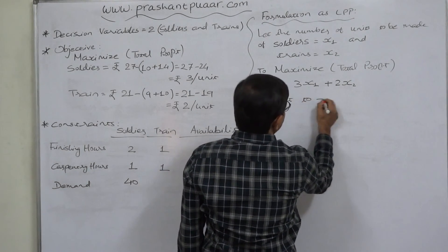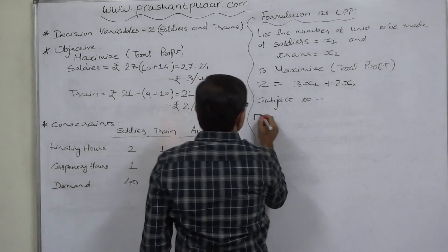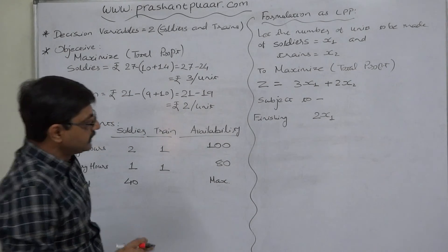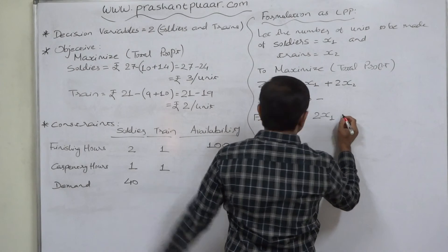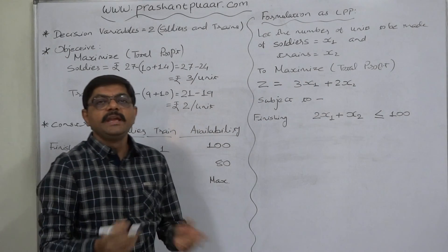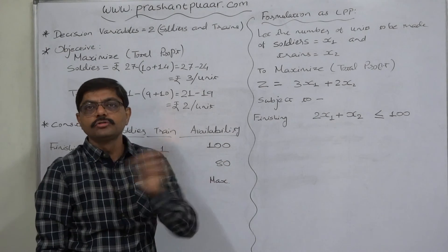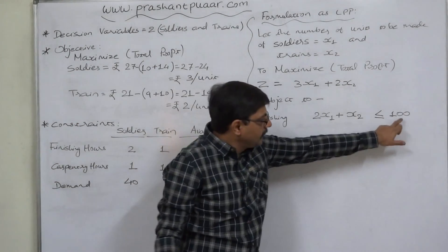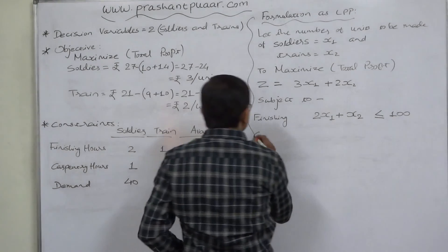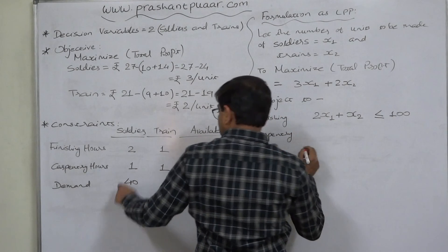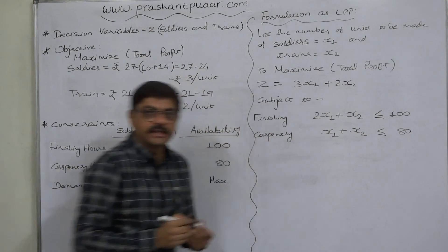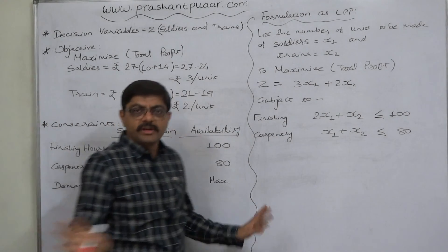Subject to constraints: the finishing hours constraint is 2x1 + x2 ≤ 100. We use less than or equal to 100 because we have only 100 hours available and cannot use more. The carpentry hours constraint is x1 + x2 ≤ 80, since we have only 80 hours available — either we use exactly 80 or less.